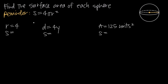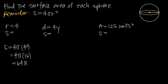So what happens if we're told that the radius of the sphere is equal to 4? All we have to do is plug 4 in for r in our surface area formula. So we get surface area equals 4 times pi times 4 squared, which gives us 4 pi times 16. Since 4 times 16 is 64, we end up with a surface area of 64 pi square units.